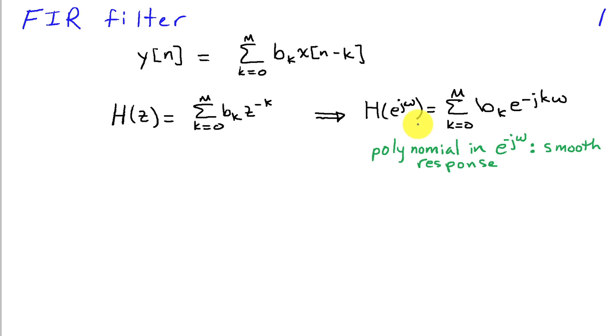It's useful to note that the frequency response here is a polynomial function of e^(-jω). The fact that it's a polynomial means that this frequency response is going to have to be smooth, and that has an impact on the kind of frequency responses that can be realistically designed with FIR filters.